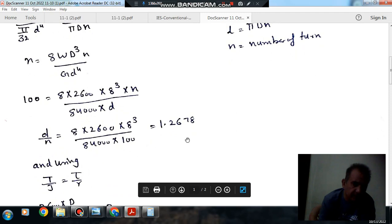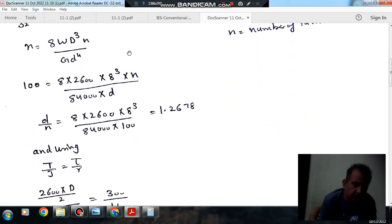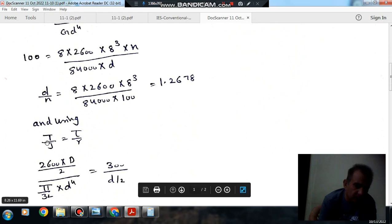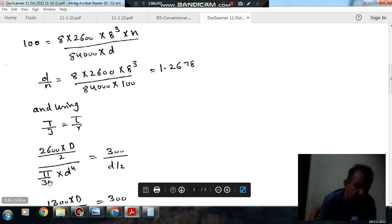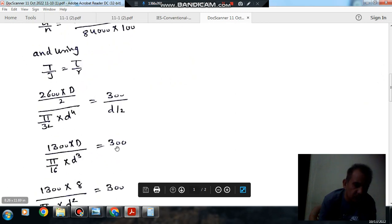Now using the other two equations, T by J equals tau by R. We have T equals W D by 2, so that is 2600 D by 2. And J equals pi by 32 small d to the fourth, and R equals d by 2. Tau is given as 300.